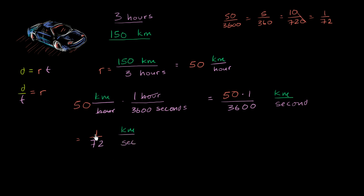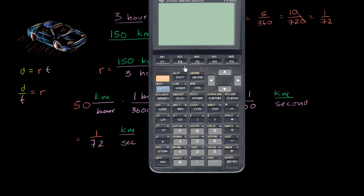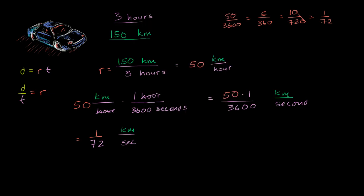Now, I would claim that this is not a reasonable unit for this example. 1/72nd of a kilometer every second doesn't help much — I know that in 72 seconds I'll have gone a kilometer, but that's strange to conceptualize. If someone said you're going 0.0139 kilometers per second, that doesn't make a lot of conceptual sense. So 50 kilometers per hour is a very reasonable way to express this rate, while 1/72nd of a kilometer per second seems unreasonable.